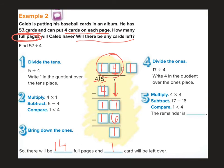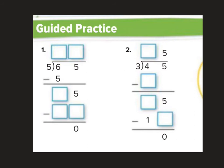Let's do another one. Six divided by five is one. Five times one is five. Six minus five is one. Bring it on down and divide: fifteen divided by five is three. Five times three is 15. Fifteen minus fifteen is zero. So in this case we have no remainder. Five times thirteen is 65.